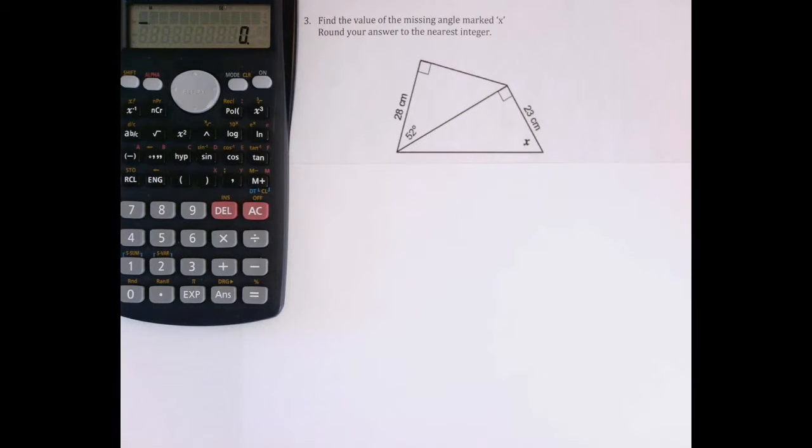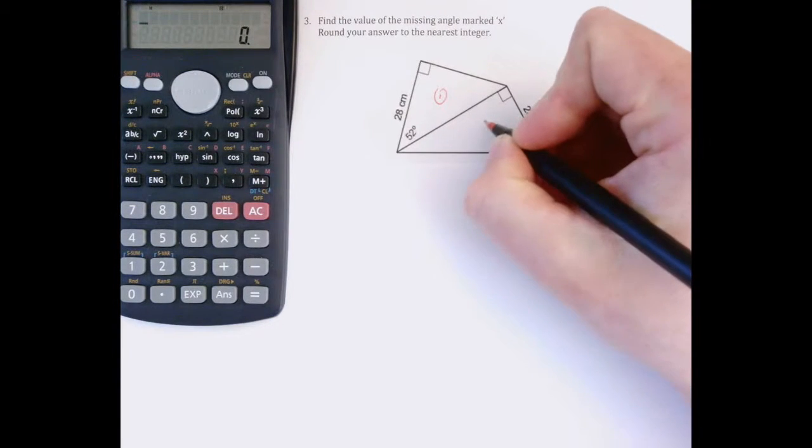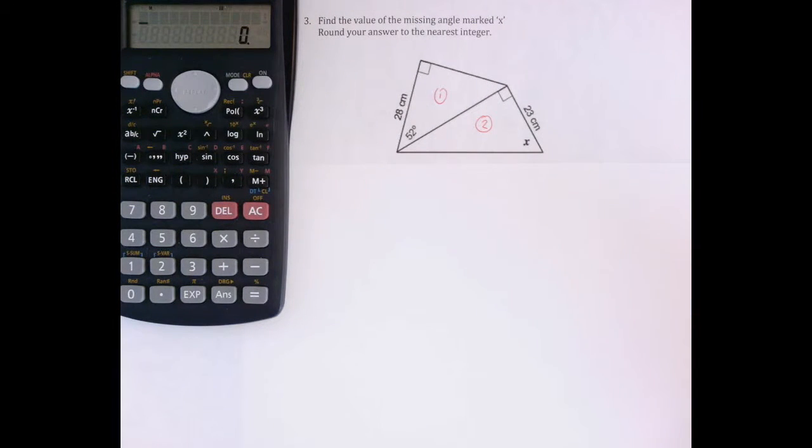Alright, question three is a bit tougher because we've got two shapes in the same question. What we like to do here is identify how many different right angle triangles we have in this SOHCAHTOA question. There are two of them.